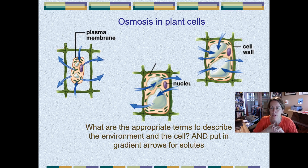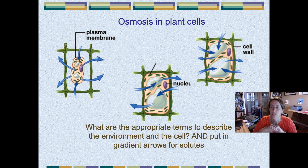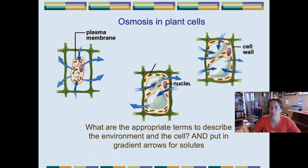For the middle diagram, there is an equal number of arrows going in and out. So that will be a situation where we could say the environment is isotonic to the cell, or the cell is isotonic to the environment — they're the same. And then on the third diagram on the top right, water is going in more than coming out. So we can say that the cell is hypertonic, more concentrated compared to the environment, or the environment is hypotonic compared to the cell.